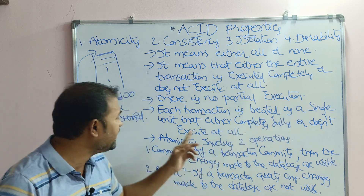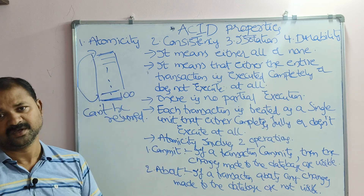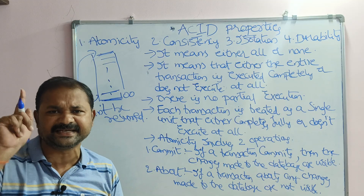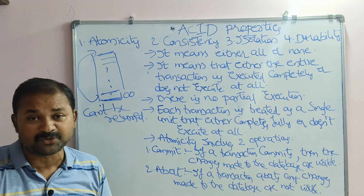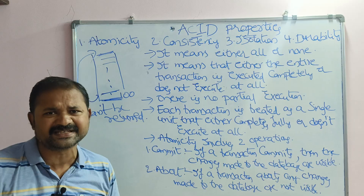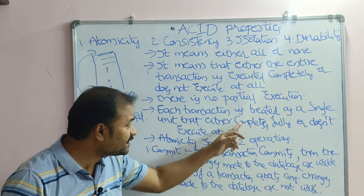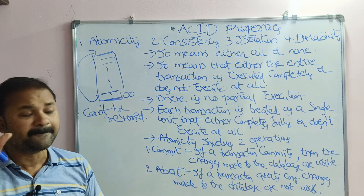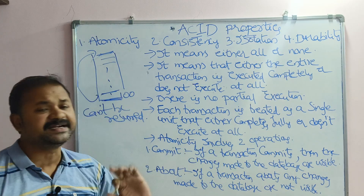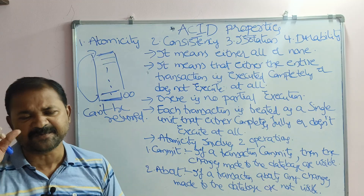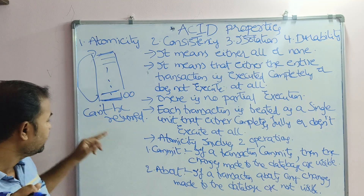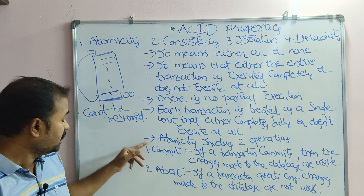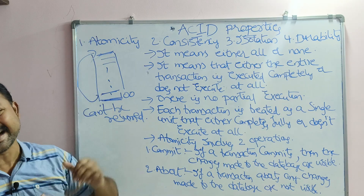Each transaction is treated as a single unit. If we have 100 instructions, then all 100 instructions are treated as a single unit and we have to execute all of them at once. That either completes fully, or if there is a problem, we have to roll back to the first instruction of the transaction.